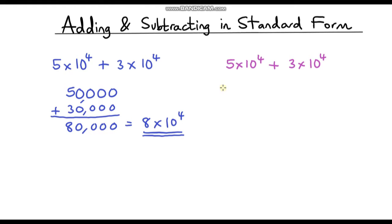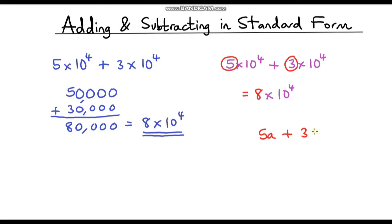The other way to think about this, which is much simpler, is just to add the two base numbers together. Notice we've got 5 of something and we're adding on 3 of that same something — these two things are exactly the same. So if we've got 5 of them and we add on 3, in total we have 8 of them — 8 times 10 to the power 4. Think of it like 5a plus 3a equals 8a. Here 'a' is 10 to the power 4, so as long as the powers of 10 are the same, we just add the base numbers.